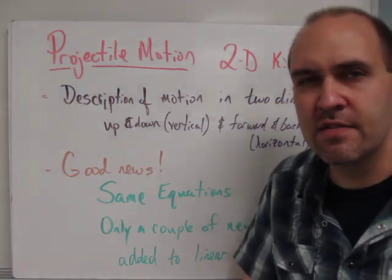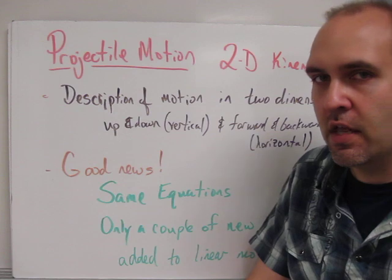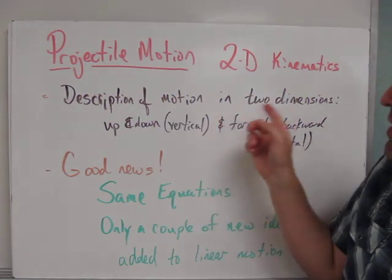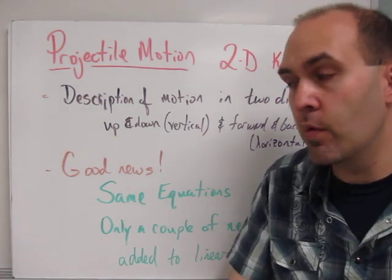Remember that kinematics word just means description of motion, so we're describing the motion of projectiles. Projectile motion in two dimensions, both up and down and sideways, forward and backward.